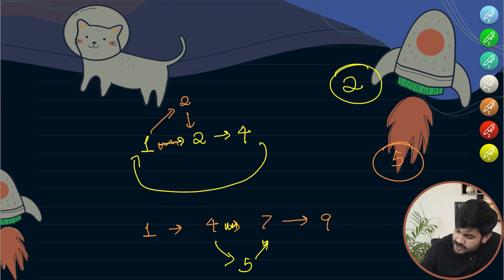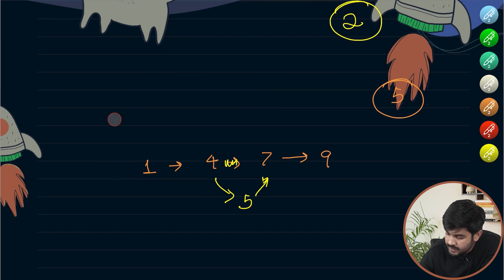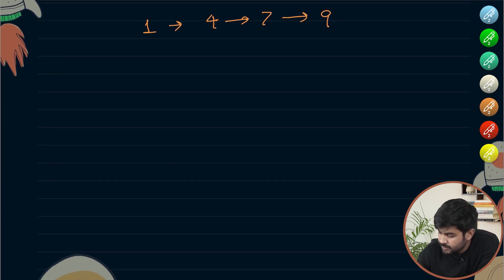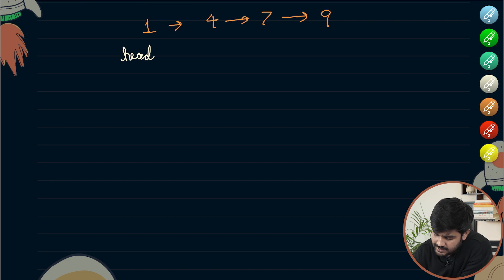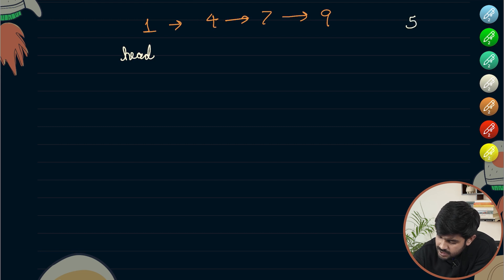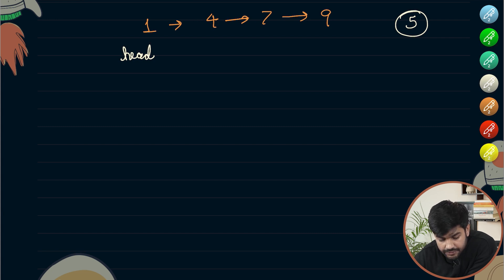Let's observe the second sample test case. This was the initial state — we call this the head and you are given this. No indexing or anything is present in a linked list. What we would do is observe that the value to be inserted is 5, and we would first traverse till the point the value is less.